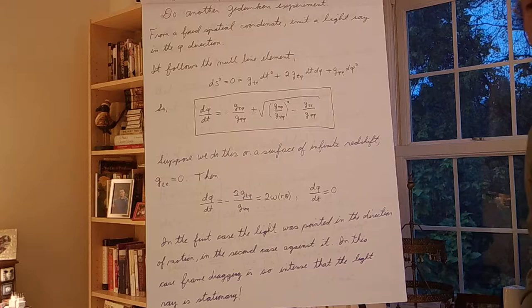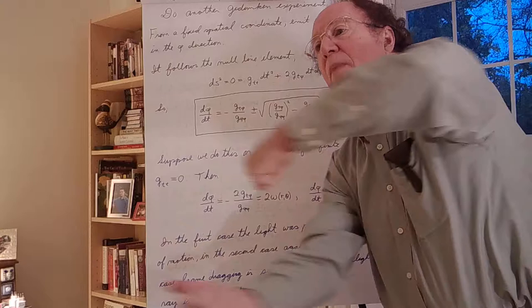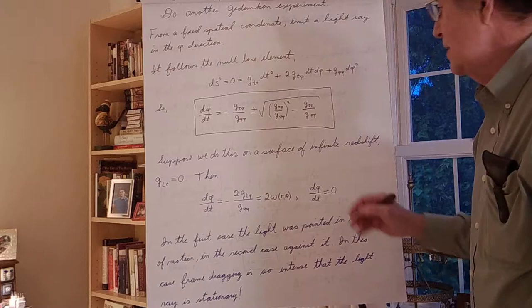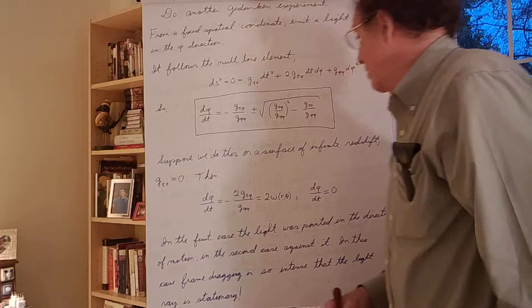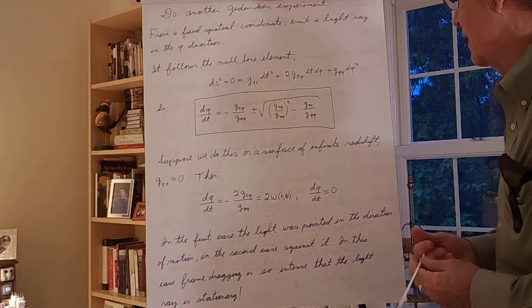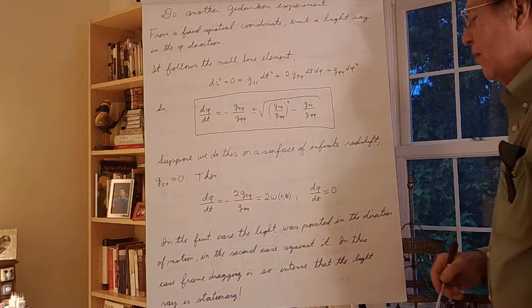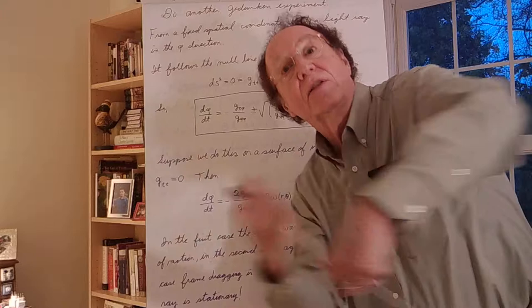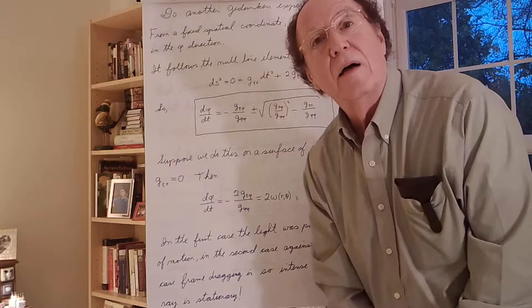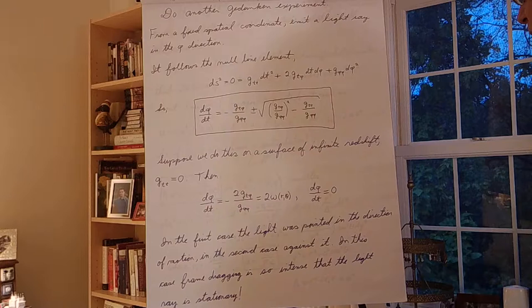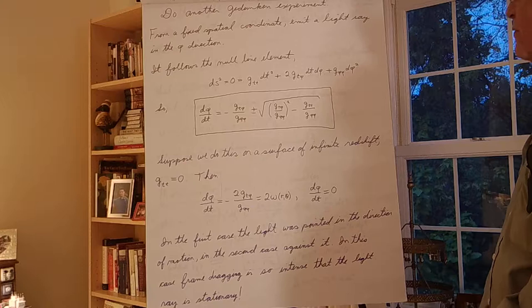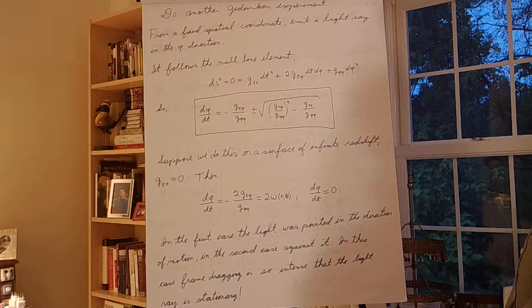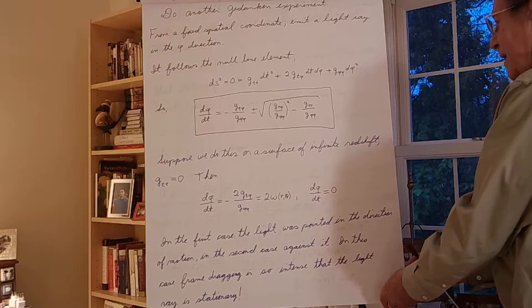These are remarkable solutions. One solution is d phi/dt equals zero — the light ray shot opposite to the rotation is completely stopped. And the other gives d phi/dt equal to twice omega — the light ray shot in the direction of rotation is dragged along at twice the natural rotation rate of the star. So the spacetime is dragging the photon with it, and when shooting opposite the rotation the dragging is so intense it stops the light ray entirely. That's an intense and remarkable form of frame dragging on the surface of infinite redshift.